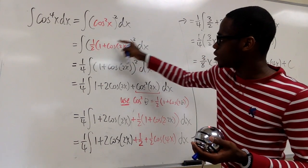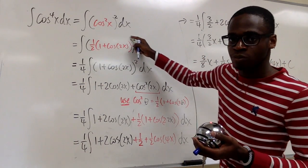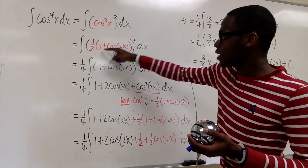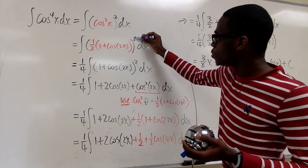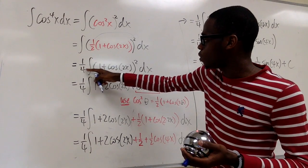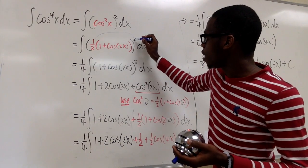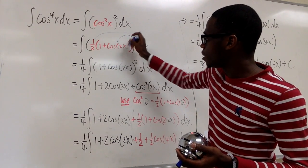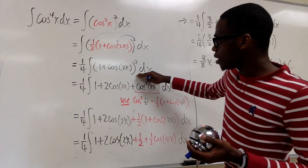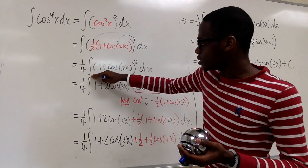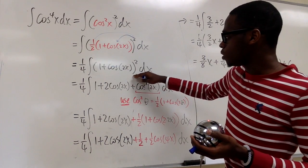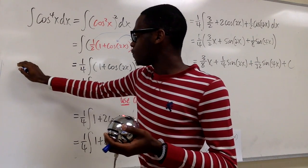Now we distribute this square. Notice how it's multiplying — we're allowed to distribute the square, but if we were adding we would not be allowed to do that. So we distribute the square and we have one-fourth, and then we have this quantity squared.